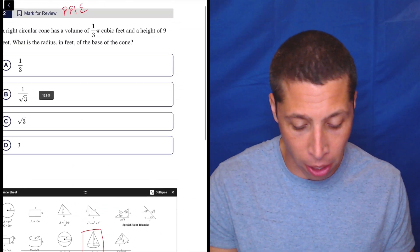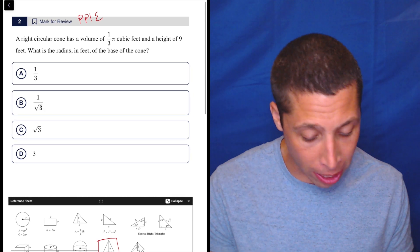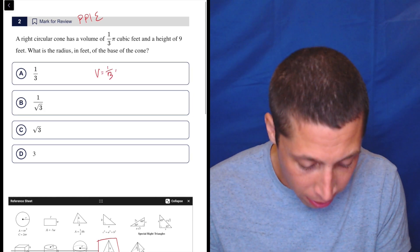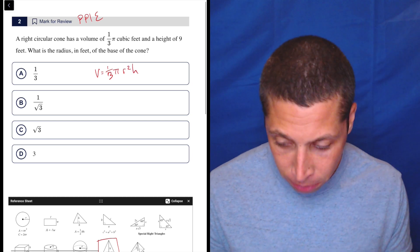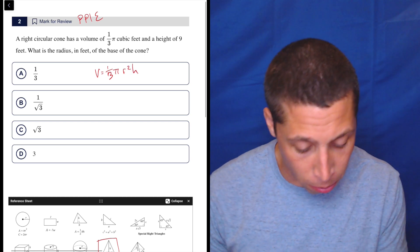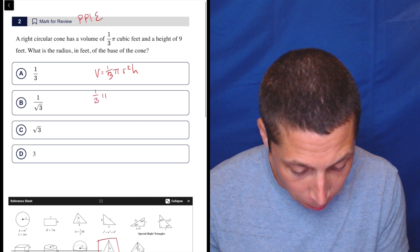So we're going to use that formula. Volume is one third pi r squared h. So if I had my scratch paper, I would definitely write that down is one third pi r squared h.